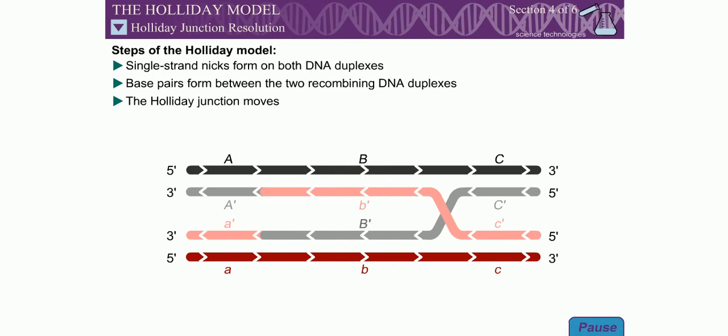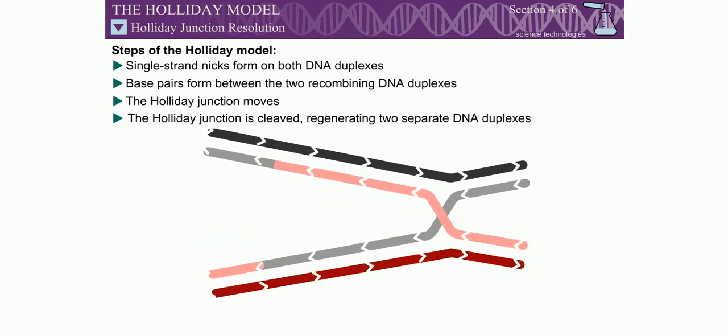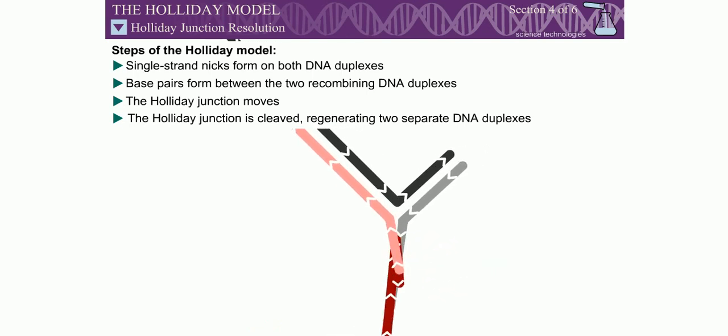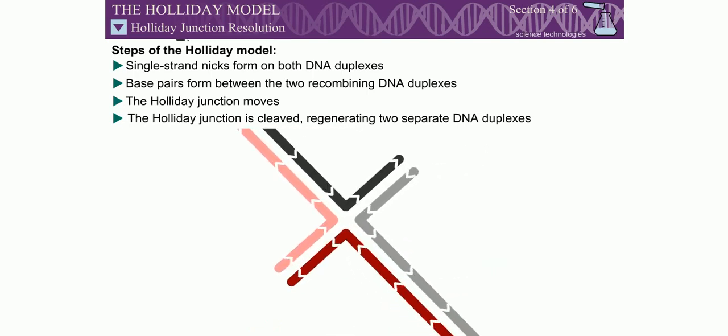The final step of DNA recombination is cleavage of the Holliday junction to regenerate two separate DNA duplexes. This process is called resolution. To aid in the visualization of this step, the Holliday junction is rotated to give a square planar structure with no crossing strands.